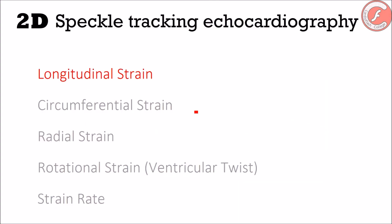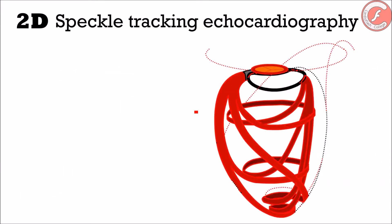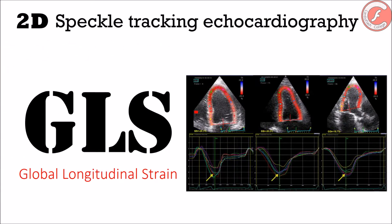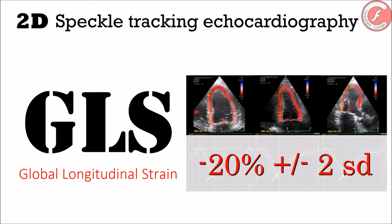Of all these parameters, the longitudinal strain is the most used one because it represents the shortening of the subendocardial fibers, and these are precisely the first fibers to be affected in most cardiopathies. The global longitudinal strain has achieved great clinical importance in recent years because it represents the average of the longitudinal strain of all myocardial segments obtained in the apical 4-chamber view, apical 2-chamber view, and apical 3-chamber view. According to the American Society of Echocardiography, the global longitudinal strain must reach an approximate value of minus 20% ± 2 standard deviations, although this value can vary depending on the machine's brand and some technical aspects or specific clinical situations.